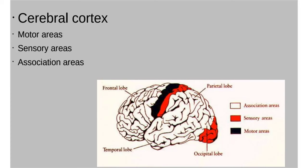The sensory areas — shown in red in the brain drawing — receive information from your various senses: things like smell, sight, touch, and taste. A lot of sources say you have five senses, but that's not really true. There are many, many senses that all go into your sensory areas.